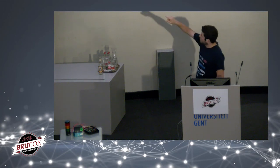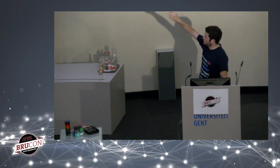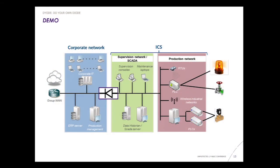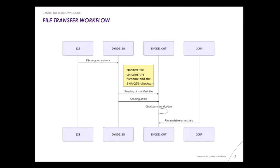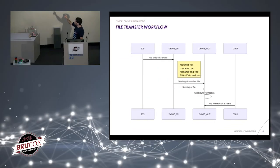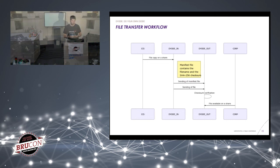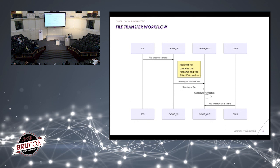The data diode sits between the supervision network and the corporate network. For the file transfer workflow: you copy a file into a network share, the input Raspberry Pi calculates a checksum and sends it along with the file to the output Raspberry Pi. If the checksum matches, the file is confirmed correct and copied to the output network share for the corporate workstation to retrieve.